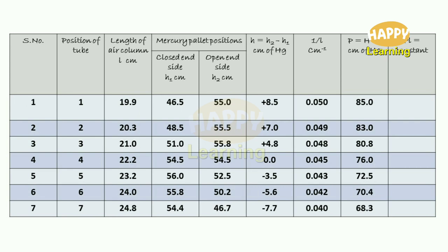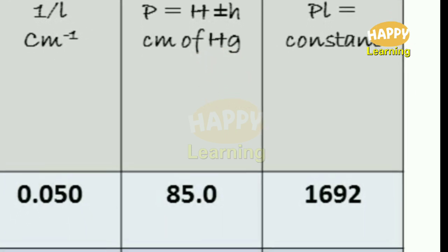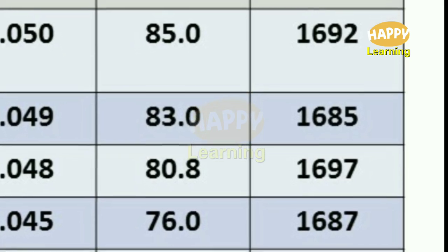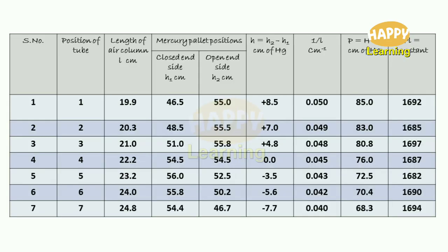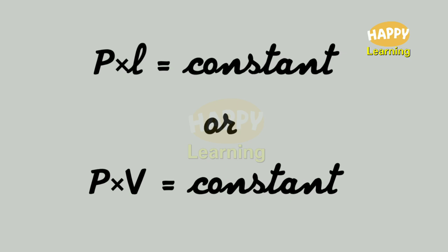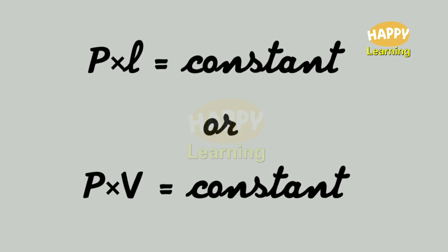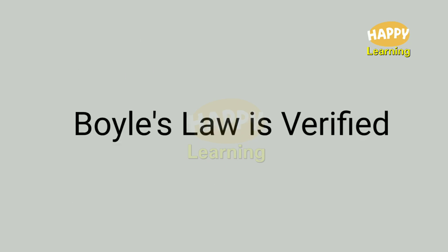Using the atmospheric pressure value from the graph, the total pressure P equal to capital H plus or minus small h is calculated and written in the table. Finally, the product of pressure and length of the air column, P times L, is calculated and written in the table. If you observe carefully, the product values P times L are almost close to each other — that means PL is a constant, or in other words PV is a constant. That means we have proved that the pressure is inversely proportional to the volume of the gas, and we have verified Boyle's law.